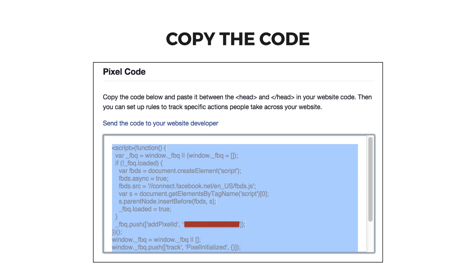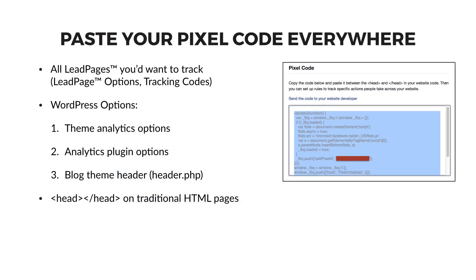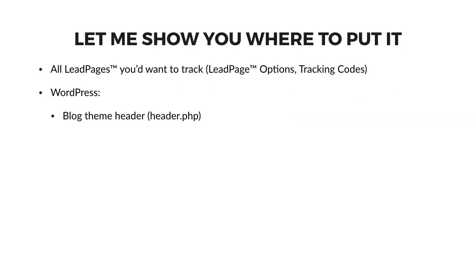This is a similar code to the conversion pixel we created in the earlier part of the course, but instead of placing this code on thank you pages, your custom audience pixel needs to go between the head tags of every web page that you own. This includes all your lead pages, your WordPress site pages, or any conventional HTML pages that you have. If you're working with a webmaster or a virtual assistant, send them this code to do this for you, but if you're doing this yourself, I'll show you two of the most important places to put the code now.